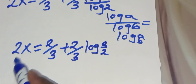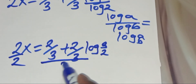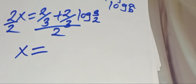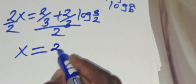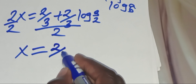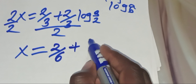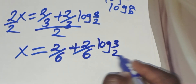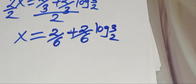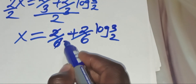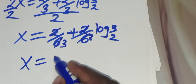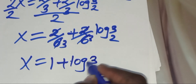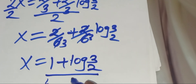Now let's divide both sides by 2, so that we'll have x equal to 2 divided by 6, plus 2 divided by 6 times log 3 to base 2. You can simplify this further so that x is equal to 1 plus log 3 to base 2, all divided by 3.